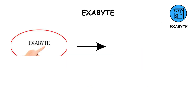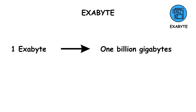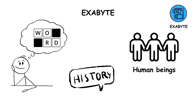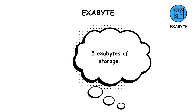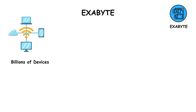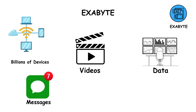An exabyte equals 1,024 petabytes. This is an astronomical amount of data — one exabyte equals about 1 billion gigabytes. Here's something to think about: all the words ever spoken by human beings in history could fit into roughly 5 exabytes of storage. That's how big this unit is. Today, global internet traffic each year is measured in hundreds of exabytes, as billions of devices constantly share data, videos, and messages across the world.